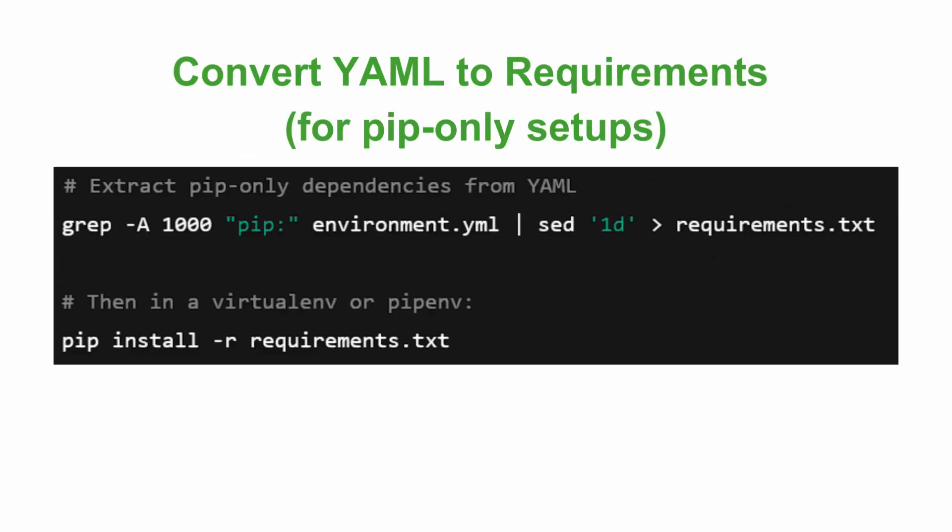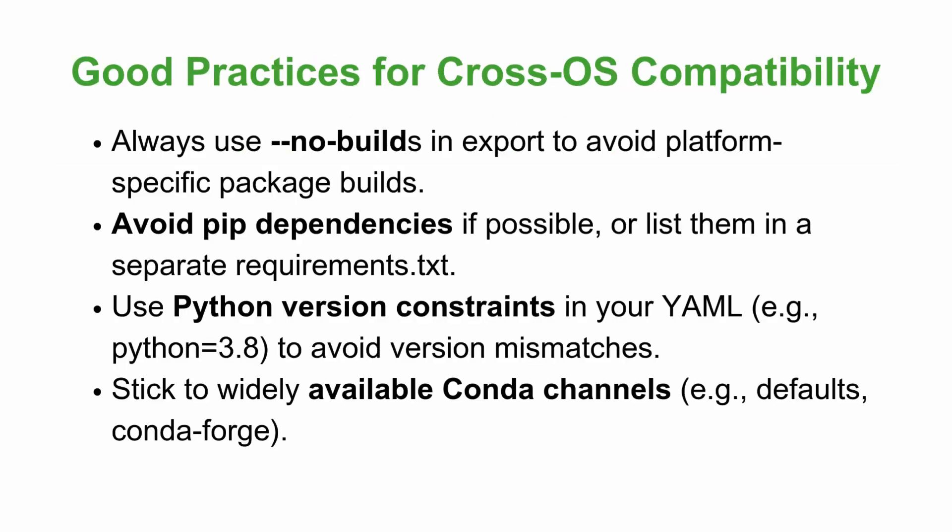This is an optional method: converting a YAML to a requirements file, for pip-only setups. If you want to switch from conda to pip or work in a pure virtual environment, you can extract only the pip dependencies from the YAML. To do that, write 'grep -A 1000 pip environment.yaml | sed 1d > requirements.txt'. Then in a virtual or pip environment, type 'pip install -r requirements.txt'.